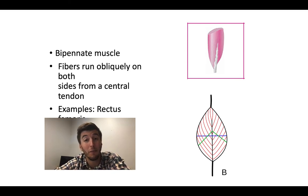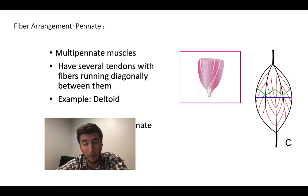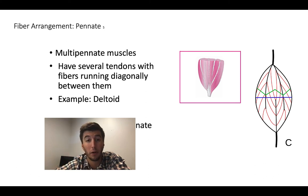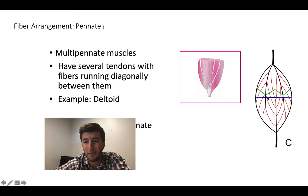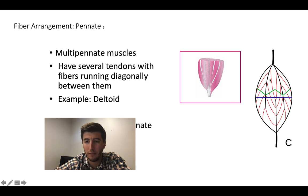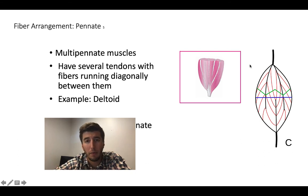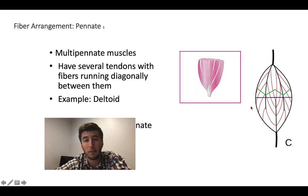A good example of a bipennate muscle is the rectus femoris. Multipennate muscles have more than two pennations — more than two branch points away from tendons. These often occur when the muscle has several tendons running diagonally through it. A great example is the deltoid. You can isolate sections that are unipennate and others that are bipennate throughout the muscle. Bipennate and unipennate muscles are the ones that produce the strongest contractions, while multipennate muscles like the deltoid, though strong, may not produce the absolute most force.